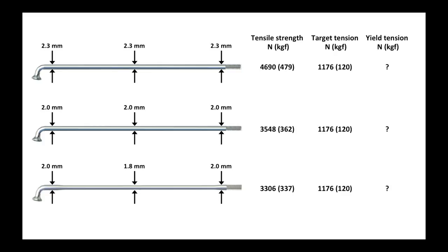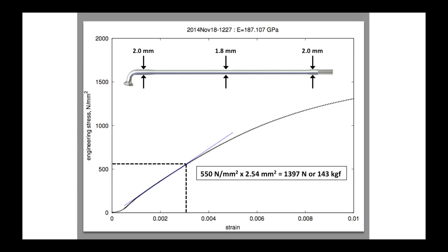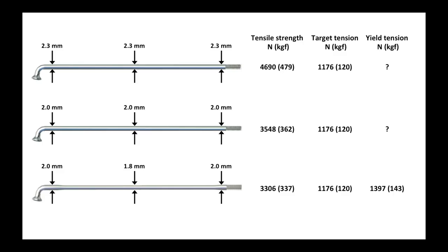But we have to worry about something called the yield tension. By conducting tests and interpreting the results, I found that I had a yield point of this Sapim Race spoke of 143 kilograms of force. So looking at that Race spoke on the bottom, the double butted spoke, whereas I have a very comfortable difference between its tension on the spoke and its tensile strength, the difference between the tension and the yield point is not so great.